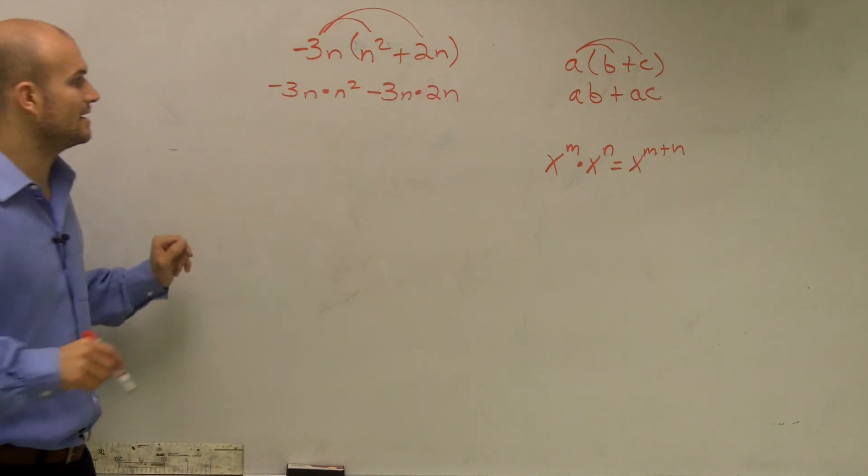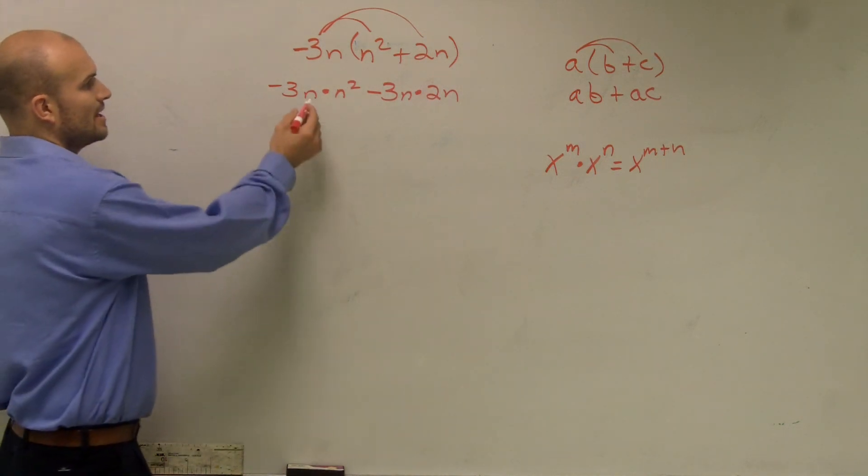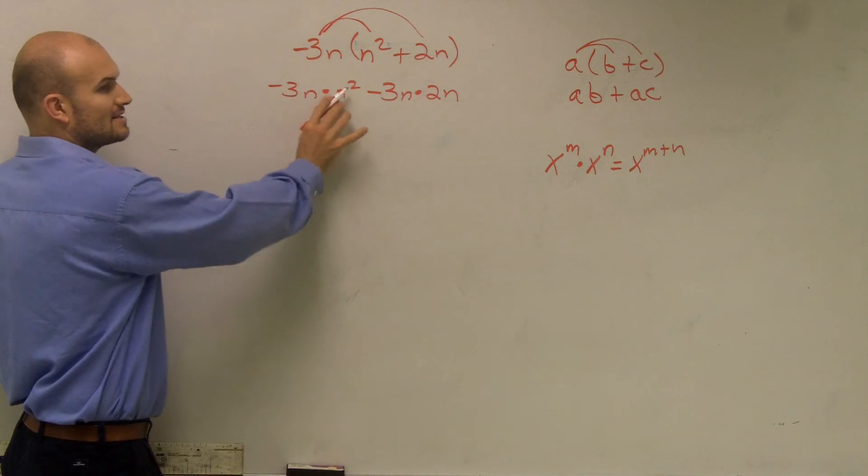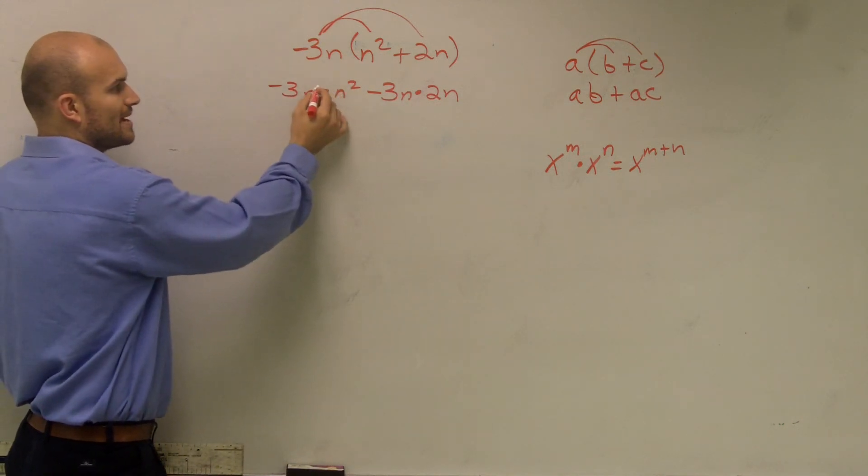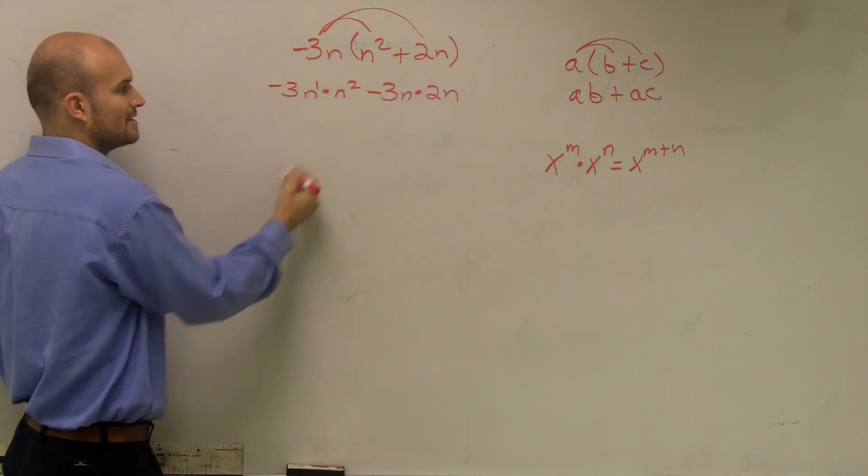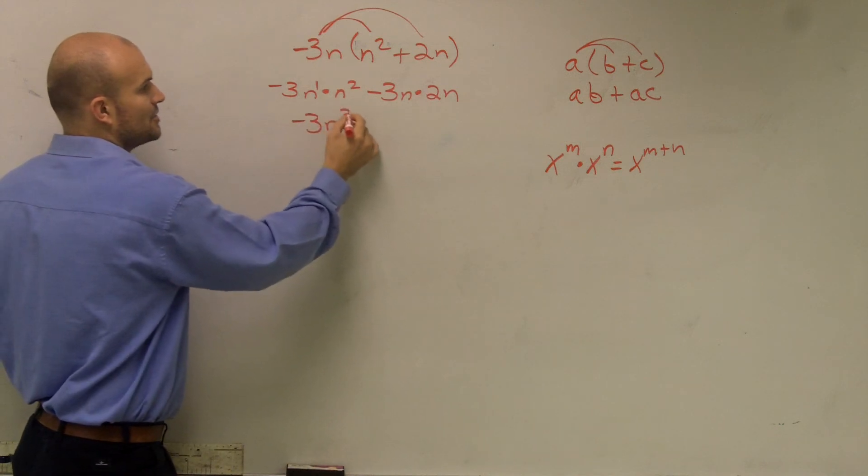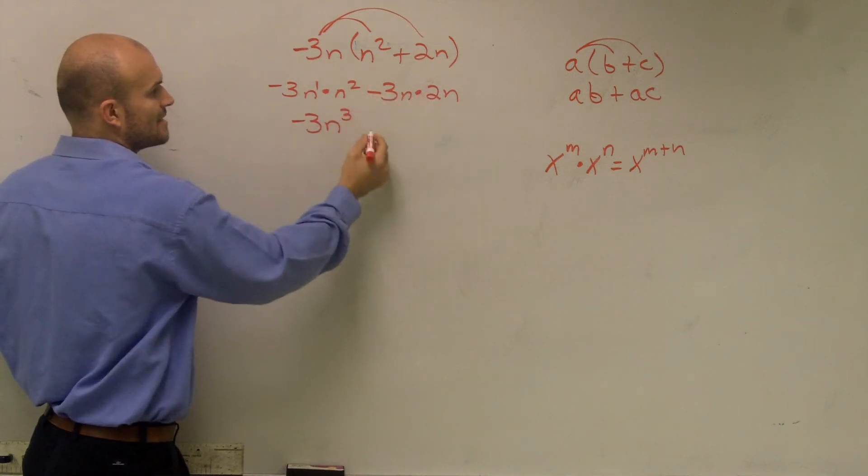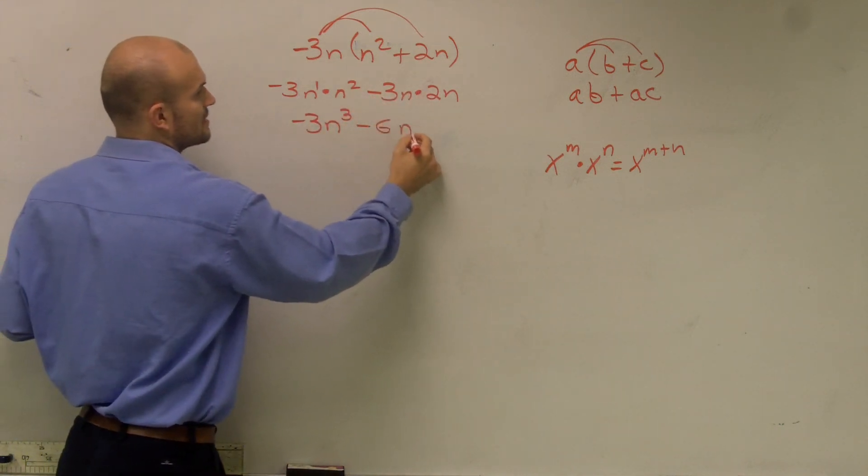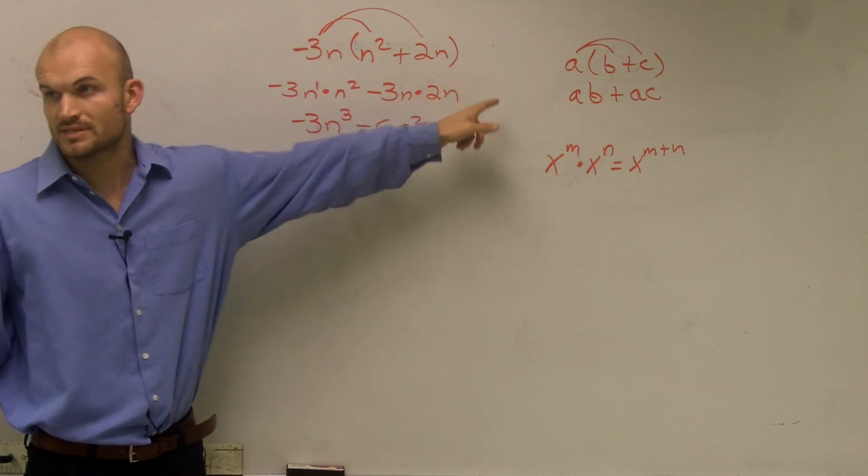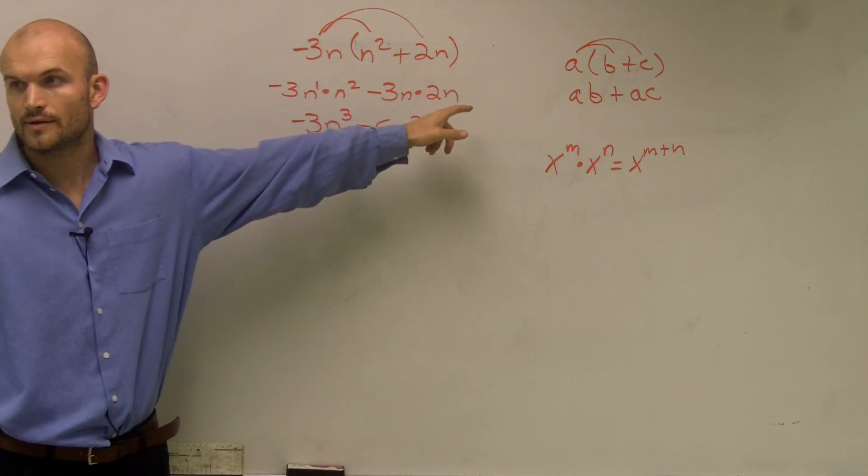So let's look at it this way. So then if I have negative 3n times n squared, what do I do with my exponents? Just simply add the exponents. Negative 3n cubed and then negative 3 times 2 is a negative 6n squared. Because n to the first plus n to the first equals 2.